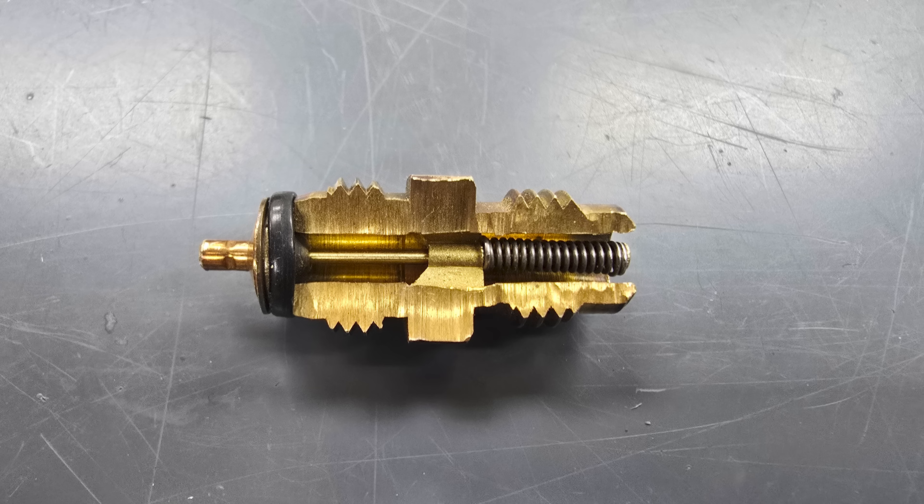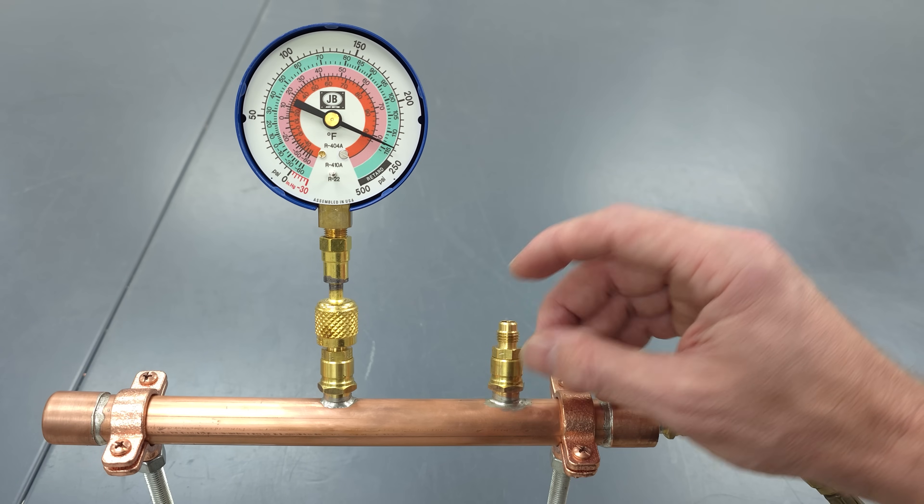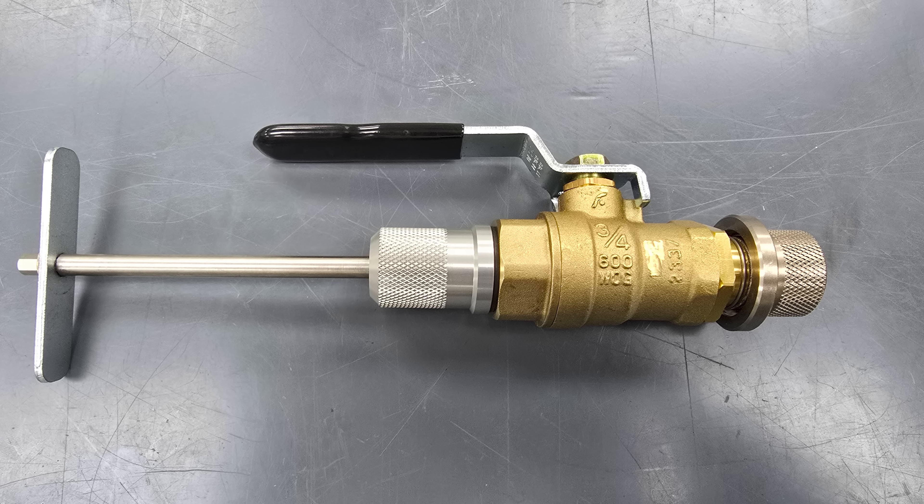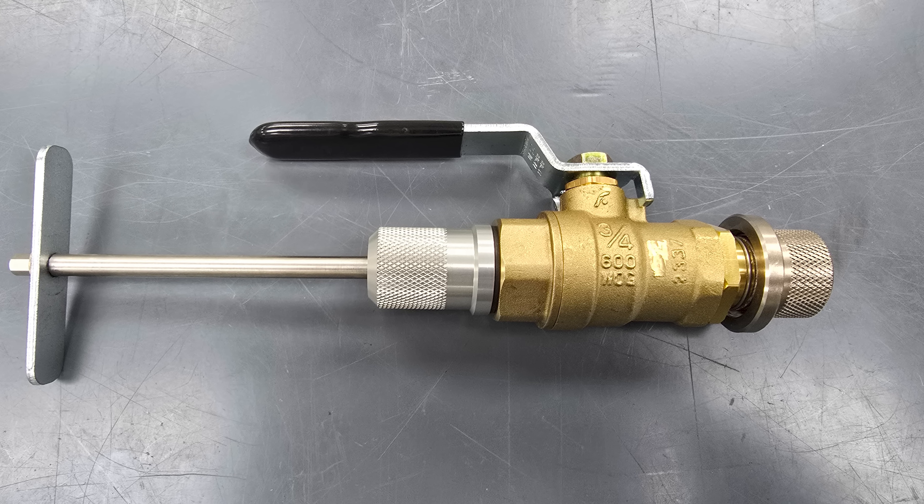I also want to show you in this video what the inside of this looks like but in this video we're also going to be replacing this even though we have pressure in here. There's a tool in order to mount this onto the Cormax high flow valve in order to replace it without losing any pressure.